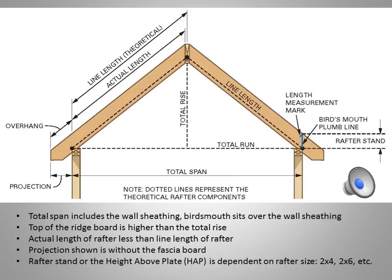One other dimension to look at is the rafter stand, denoted by the blue line — sometimes referred to as the height above the plate, or HAP. It's dependent on the rafter size: whether the rafter is a 2x4, 2x6, or 2x8 will change the amount of wood left vertically above the bird's mouth. What will happen is the ridge board will actually be higher depending on the depth of the rafter. So the rafter stand is a very important dimension because we need it to set the ridge board at the correct height.